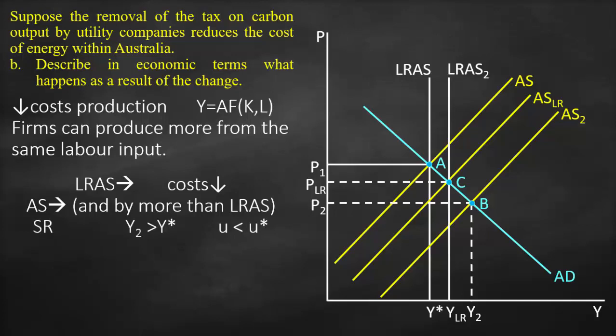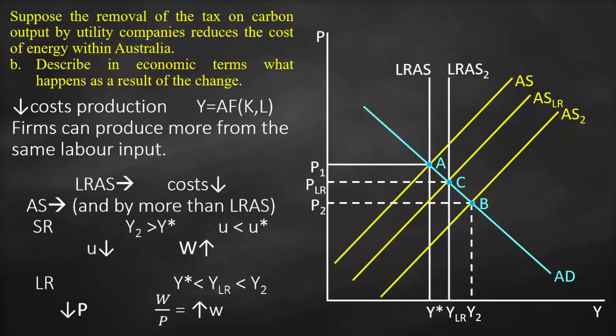In the short run, Y2 is bigger than our potential output, which means unemployment is lower than the natural rate of unemployment. Consequently, lower unemployment results in higher wages. This higher wage causes the short-run aggregate supply curve to shift to the left. Therefore in the long run, our new potential output YLR will be bigger than our old potential output and lower than Y2. Because of lower prices, wages will increase — and here we refer to the real wage.